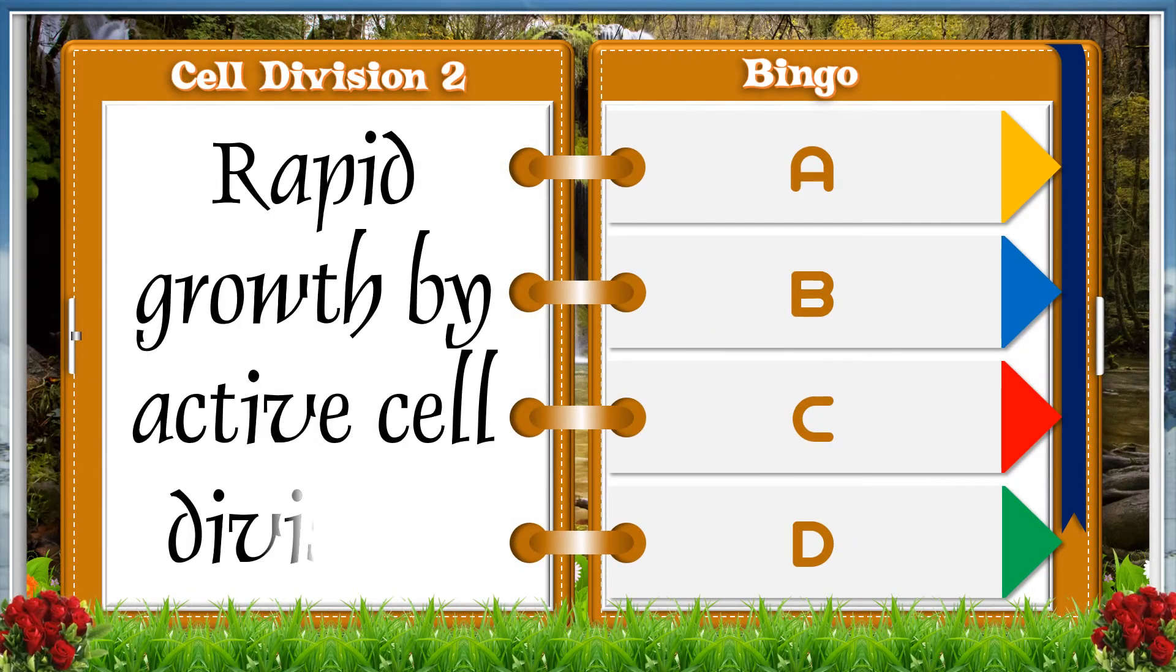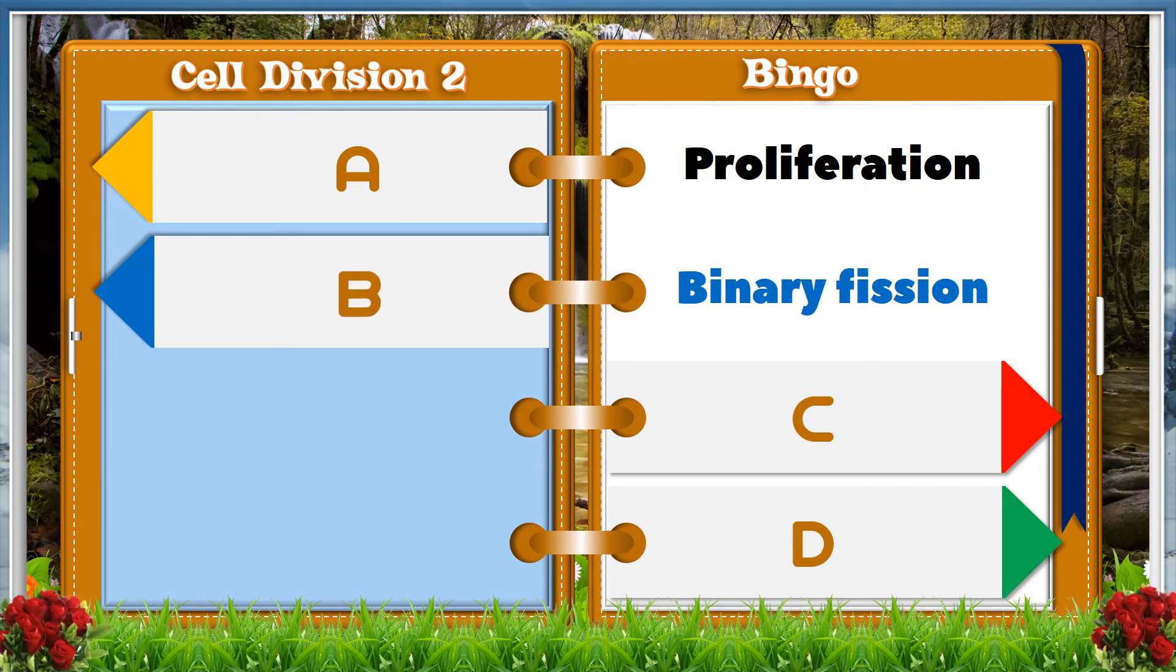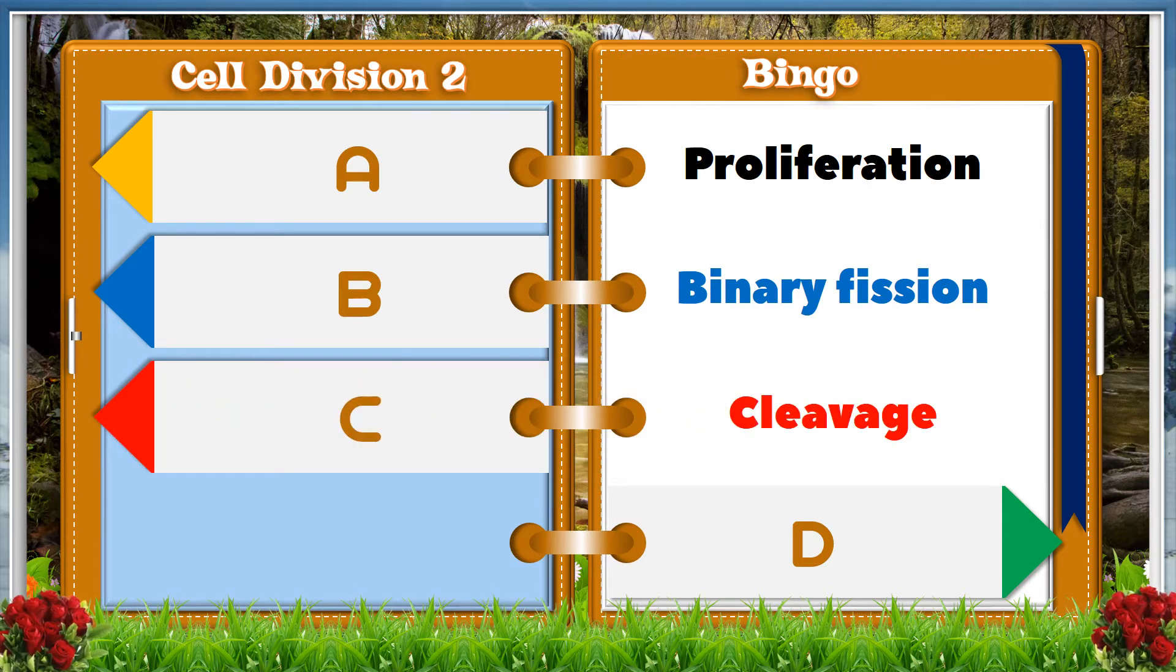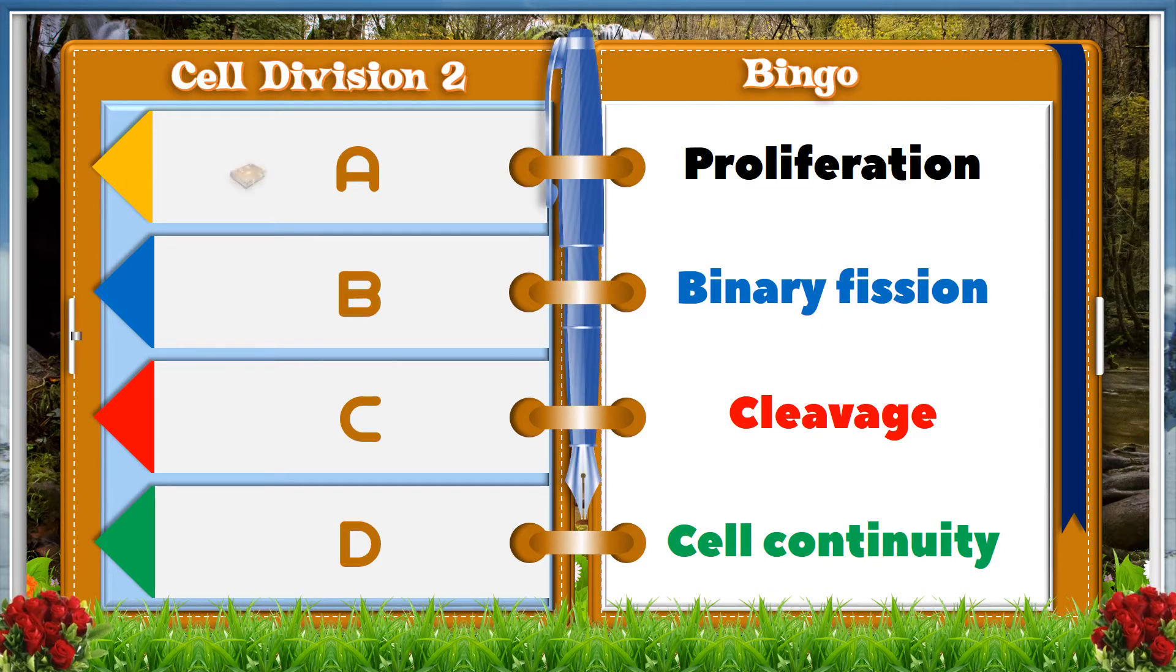Rapid growth by active cell division. A: proliferation, B: binary fission, C: cleavage, D: cell continuity. And the answer is A, proliferation.